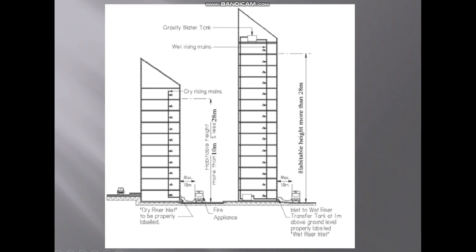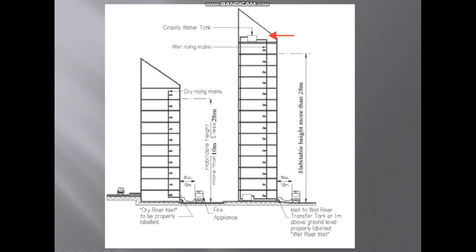If a fire happens, people will start running from the usable story level down to the bottom of the building, not from the roof level, because that is open space and it is not the usable story. We need to consider from the fire engine standing level to the enclosed space and usable story floor level. This is called the habitable height.